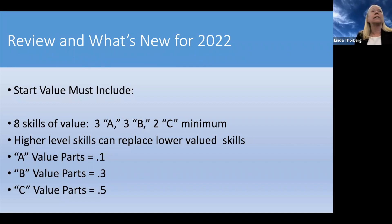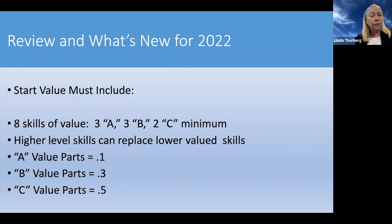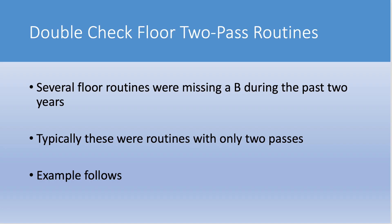Sometimes what happens is a start value could be a 9.9, and the athlete on balance beam was missing an A value part — maybe you thought a movement was an A and it was not. Double-check those things as you're getting ready for the season. A value parts are worth one-tenth, B's are worth three-tenths, and C's are worth five-tenths. For the past two years, there have been several floor routines across the country that were missing a B, and that resulted in a start value of 9.7.